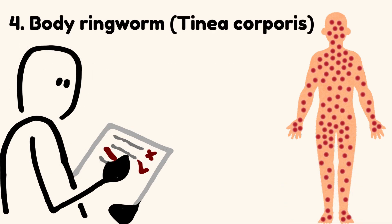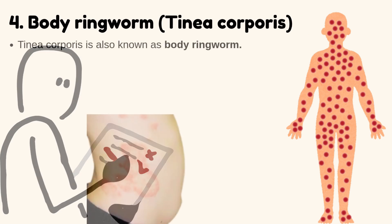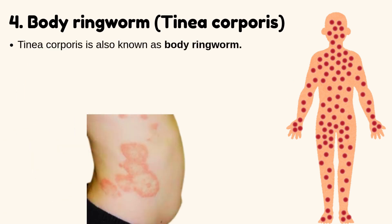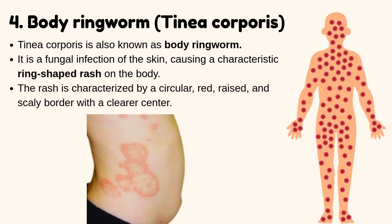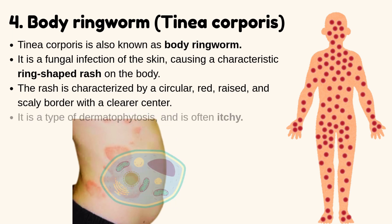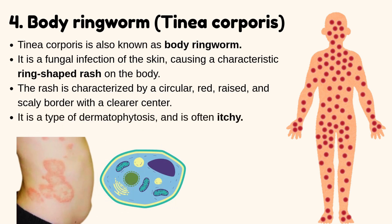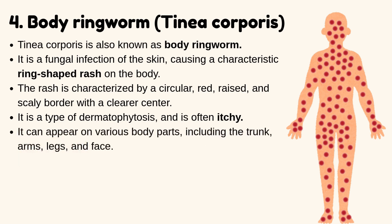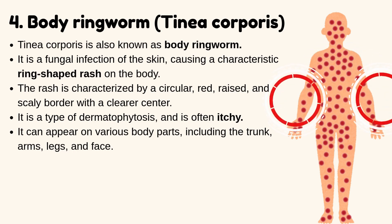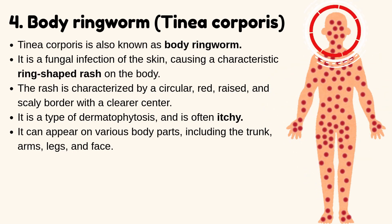Body ringworm — Tinea corporis. Tinea corporis, also known as body ringworm, is a fungal infection of the skin causing a characteristic ring-shaped rash on the body. The rash is characterized by a circular, red, raised, and scaly border with a clearer center. It is a type of dermatophytosis and is often itchy. It can appear on various body parts, including the trunk, arms, legs, and face.